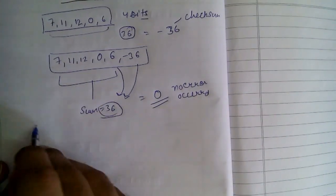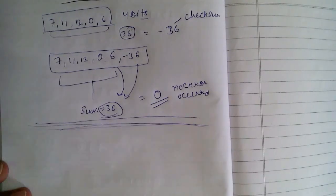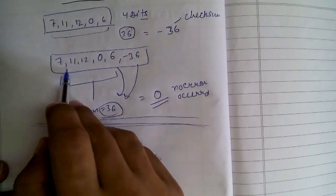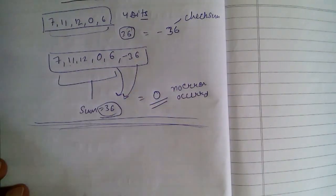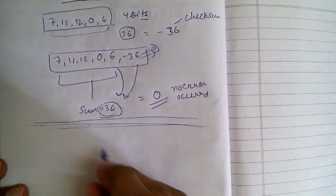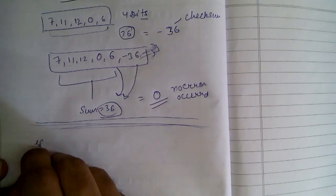Before showing you the actual example, I will discuss a few concepts. These all numbers can be represented in 4 bits, but not the sum - it is more than 4 bits. So we have to wrap it up in 4 bits. For example,